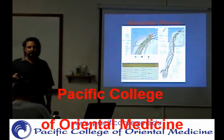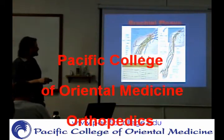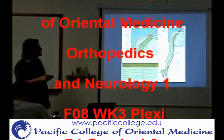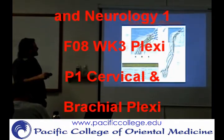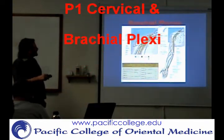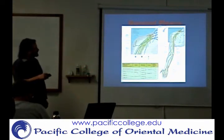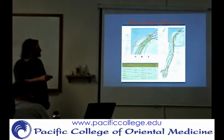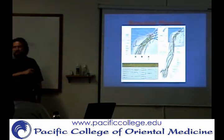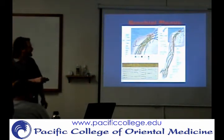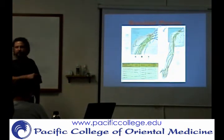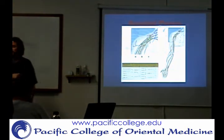C8 and T1 are usually the main things considered part of the brachial plexus. First you have roots, then you have trunks, then you have divisions and cords, and then at the other end you have peripheral nerves, which are named nerves.